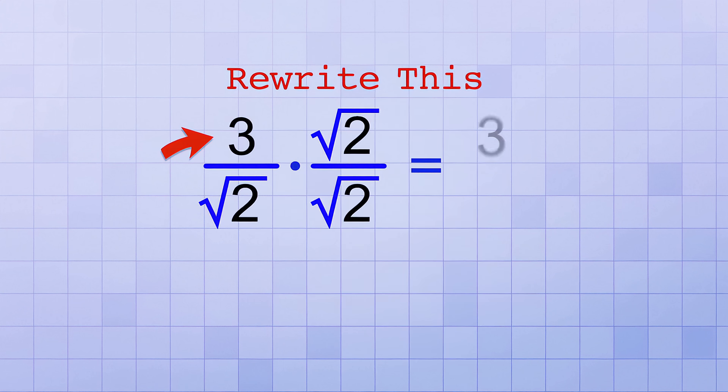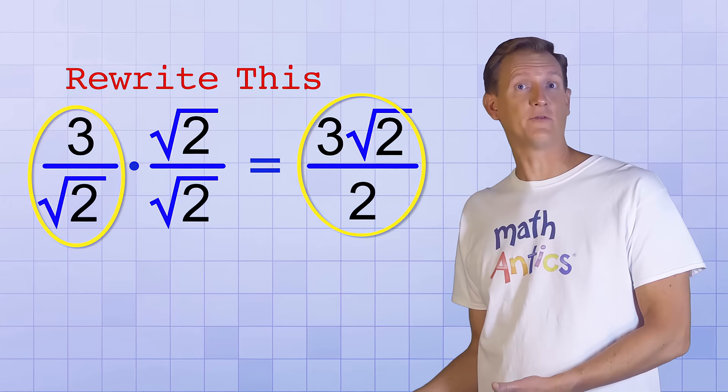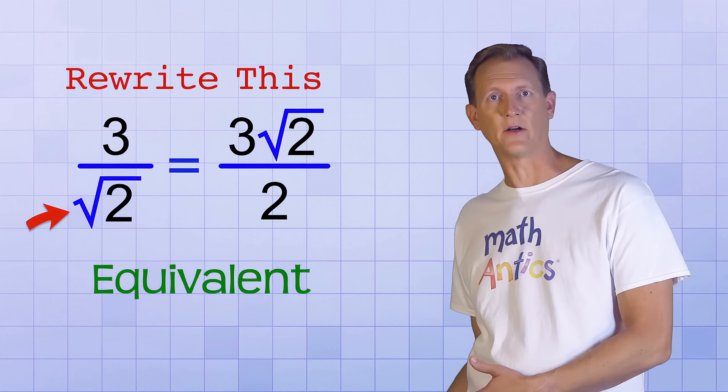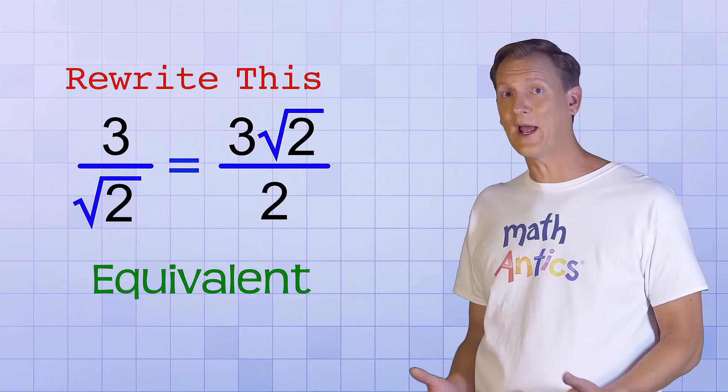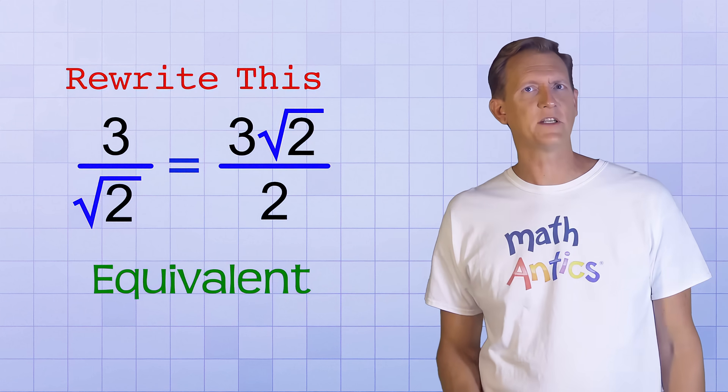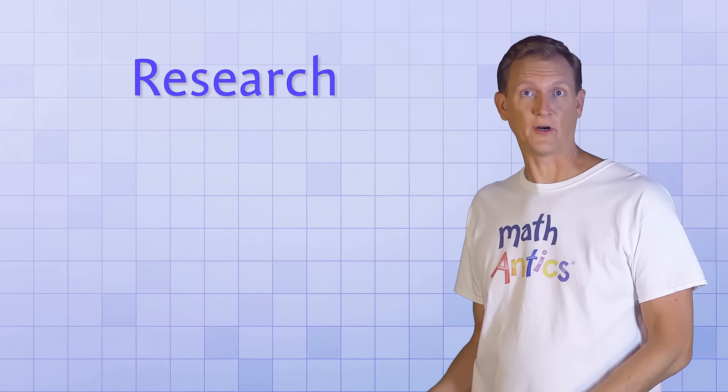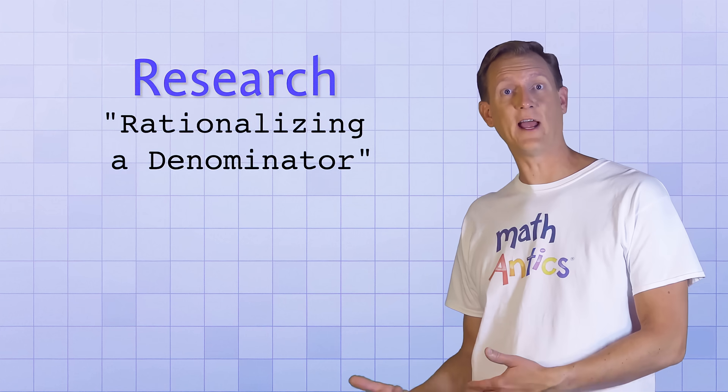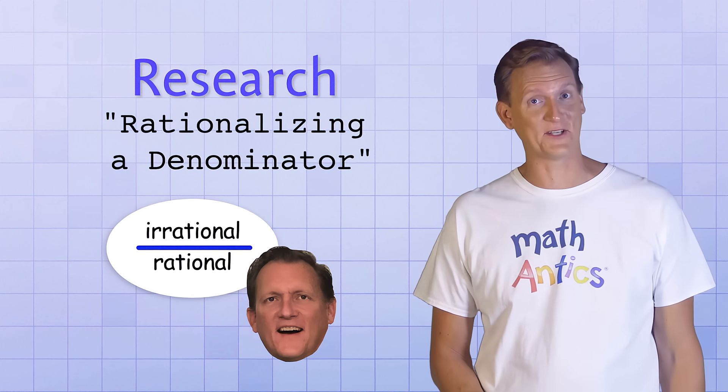On the top, we would get 3 times square root of 2, and on the bottom, we would get square root of 2 times square root of 2, which by definition will just equal 2. So these two fractions are equivalent. They represent the exact same value, but one has a radical in the denominator, while the other has a radical in the numerator. Neither answer would be wrong, but if there has to be a radical or a root in a fraction, then mathematicians prefer to have it in the numerator as a convention. If you'd like to research this idea further, it's often called rationalizing a denominator, because it's a way to change a fraction so that it has an irrational numerator instead of an irrational denominator, which makes some mathematicians feel much better.